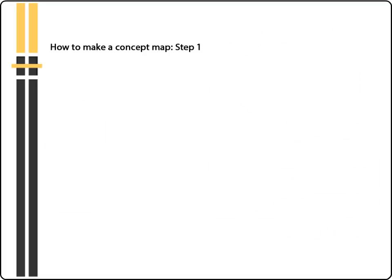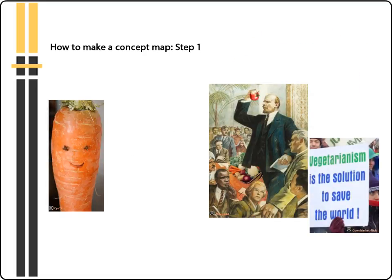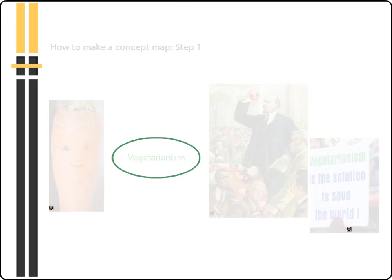In our example we will use the topic of vegetarianism to illustrate how to create a concept map. I'll begin by writing it down and then drawing a circle around it to illustrate that this is the main topic.